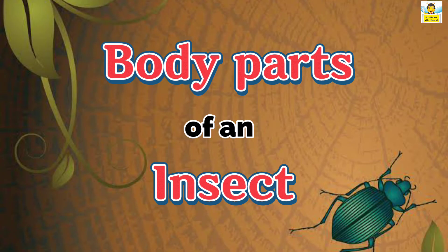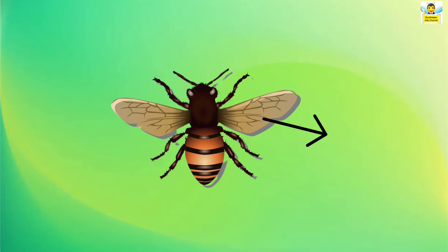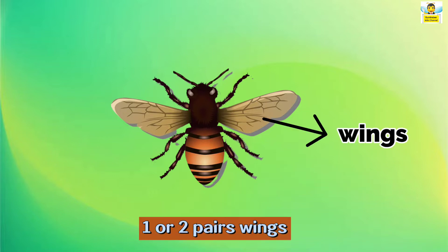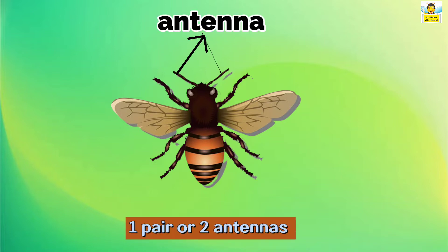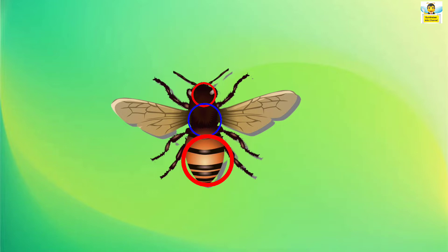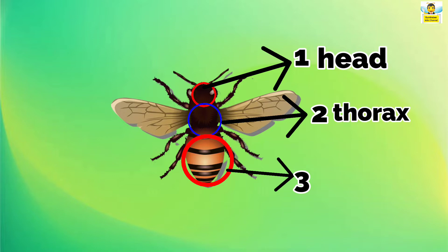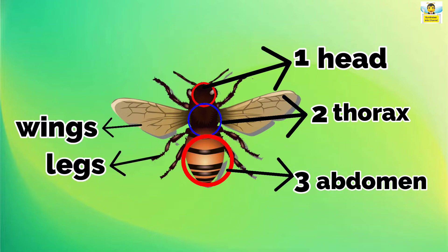Body parts of an insect: Insects are animals that have six legs, generally one or two pairs of wings and a pair of antennae. The body of an insect is divided into three main parts: head, thorax and abdomen. The wings and legs are located on the thorax.